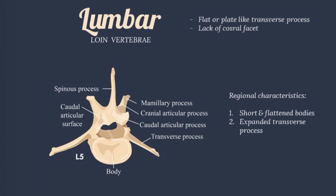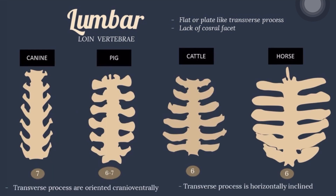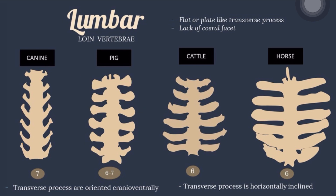The lumbar vertebrae are also called loin vertebrae. They have large, flat or plate-like transverse processes that project laterally. The spinous processes are similar to those of the last few thoracic vertebrae. They can be distinguished from the last thoracic vertebrae by the lack of costal facets. The original characteristic is a short and flattened body with expanded transverse process. In the canine, there are 7 lumbar vertebrae. In the pig, there are 6 to 7. In canine and pig, the transverse processes are oriented cranioventrally. In the cattle, there are 6 lumbar vertebrae. In the horse, there are also 6. In cattle and horse, the transverse processes are horizontally inclined.